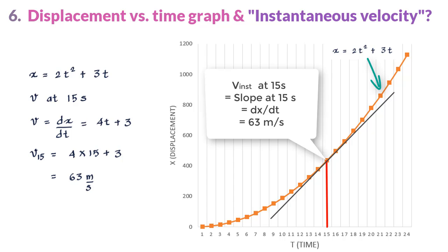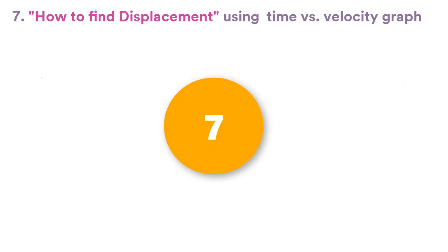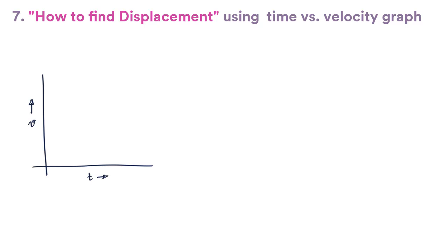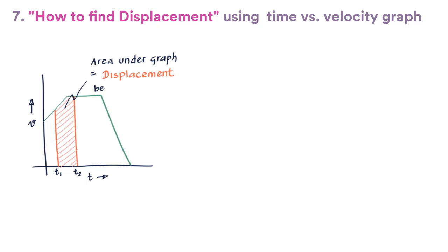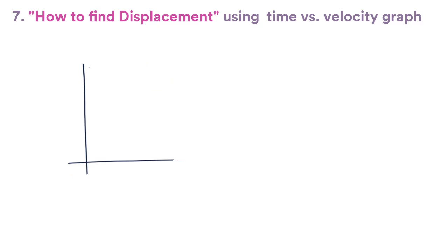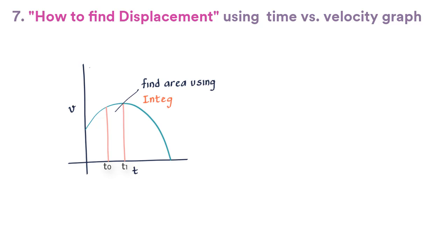How do you find displacement using a velocity versus time graph? The area under the curve between any two times is the displacement of the particle in that time interval. A positive area indicates displacement in the plus x direction; a negative area indicates displacement in the negative x direction. For a curved graph, the displacement between times t_0 and t_1 is found using integral calculus: x_1 minus x_0 equals the integral of v dt from t_0 to t_1.